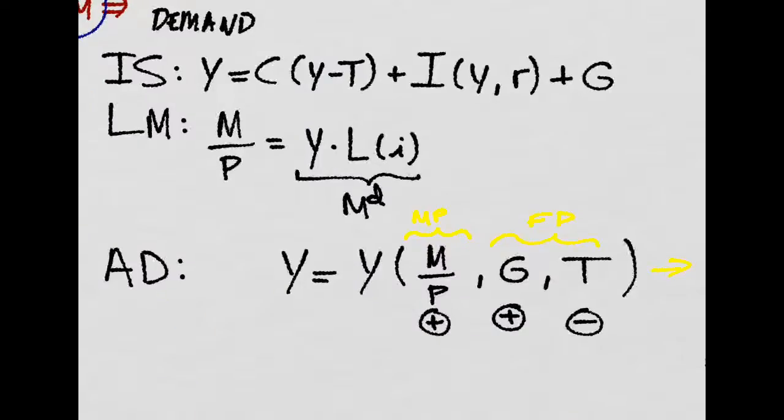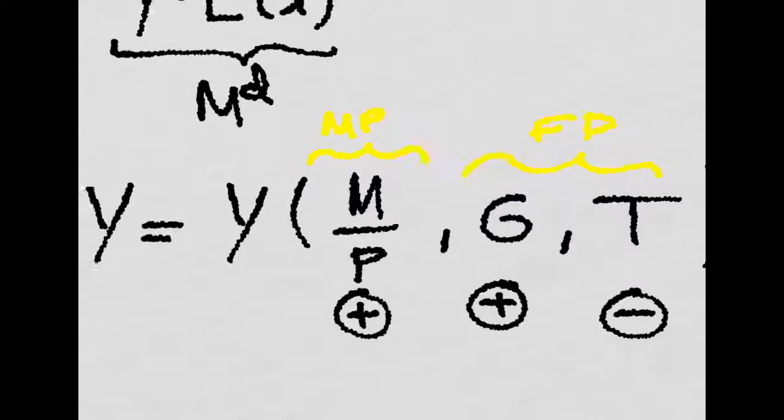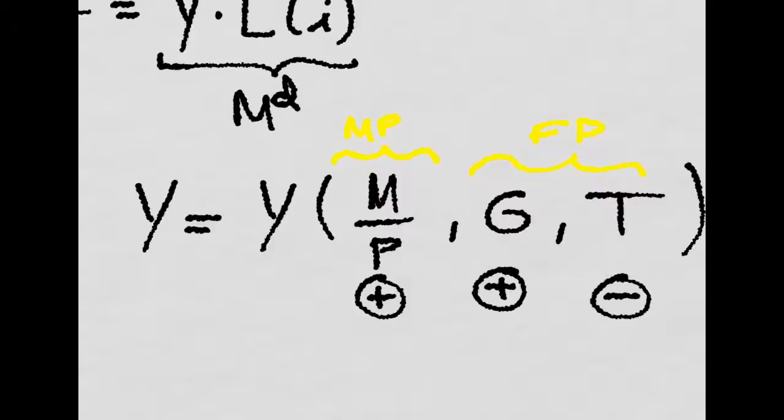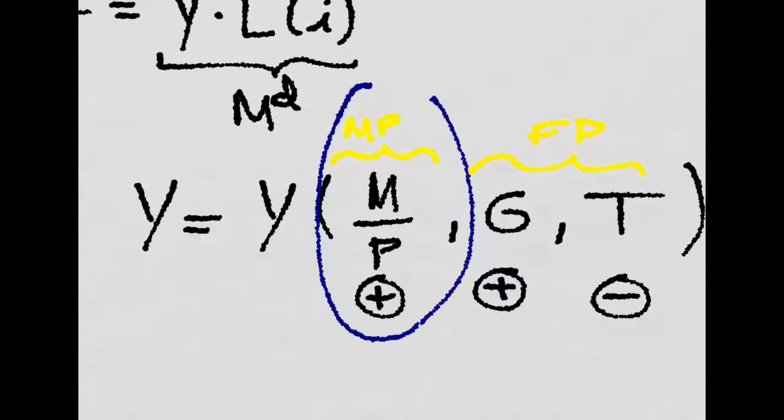So we combine them both and we get the AD, aggregate demand. Basically the relation here is that output depends on any policy change. We could have monetary policy or we could have fiscal policy.